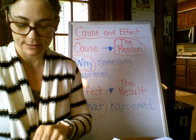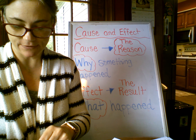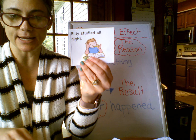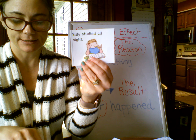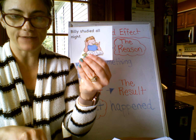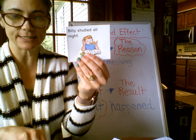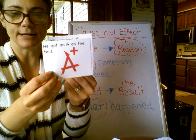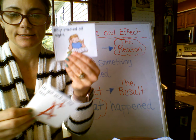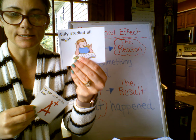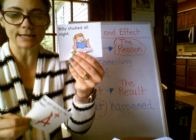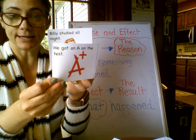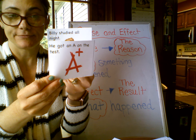The cause is Billy must have had a test, so he studied all night. What was the effect of that? If he studied all night, he got an A on the test. So the cause is he studied all night because he had a test; the effect is he got an A.